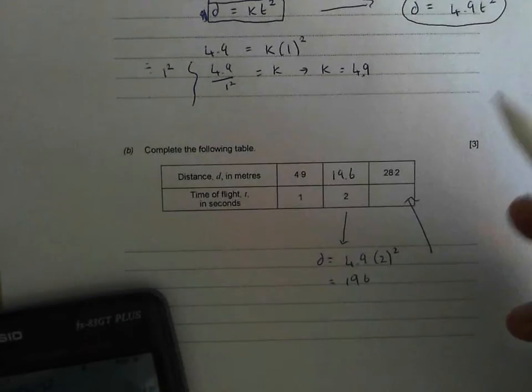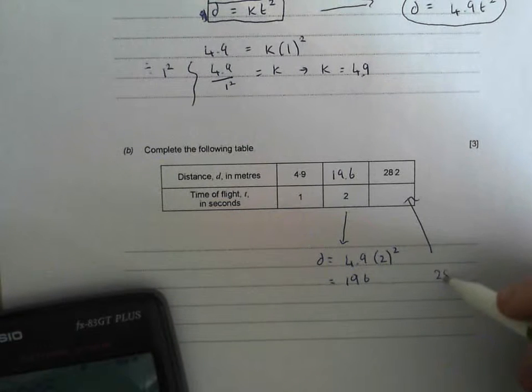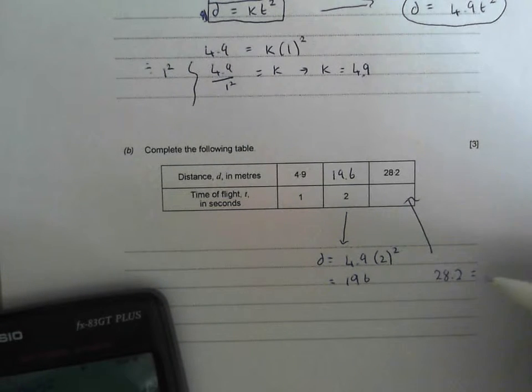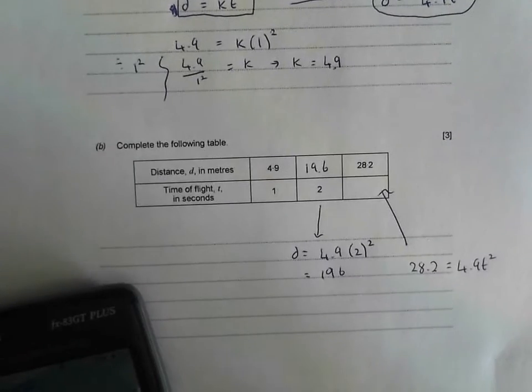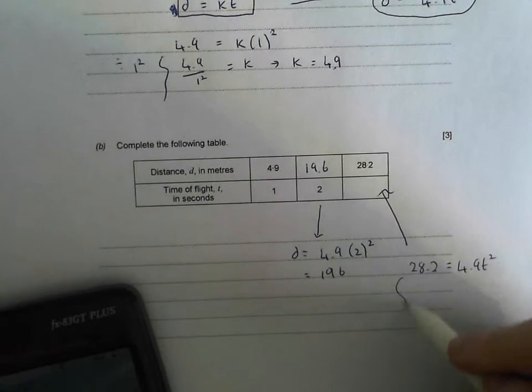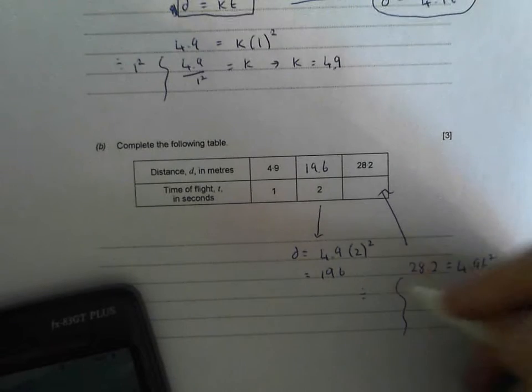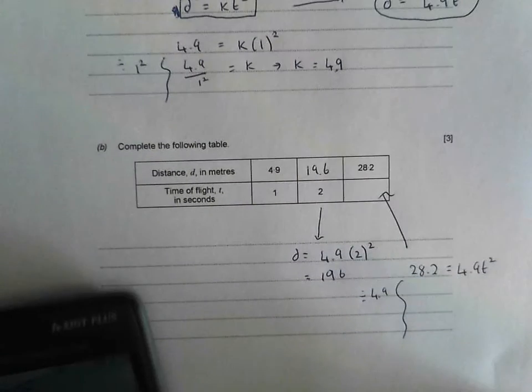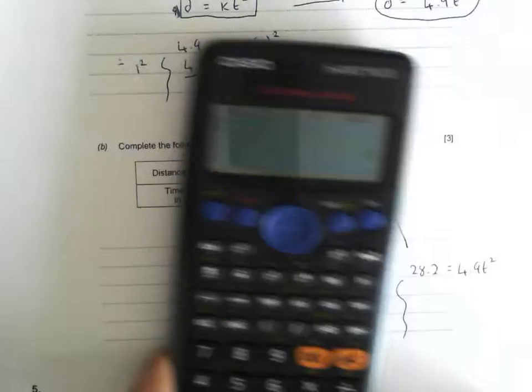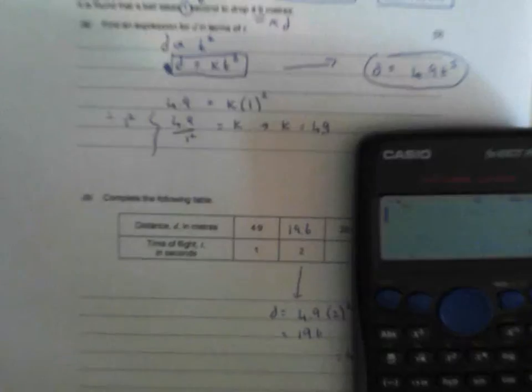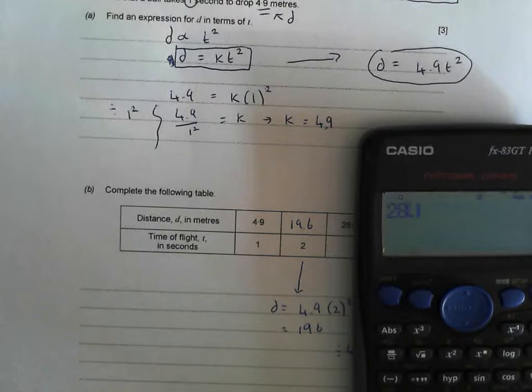So this time we get a distance of 28.2, and that's going to be equal to 4.9 t squared. And we've got to figure out what t is this time. So I'm going to divide both sides by 4.9. So I'm going to get myself a 28.2 divided by 4.9. And that's going to, oh, flipping heck, have I tapped that in right? Let's have a look at that again. That came out a bit dodgy. Let's try that again. 28.2 divided by 4.9.